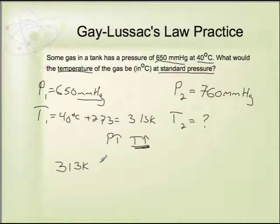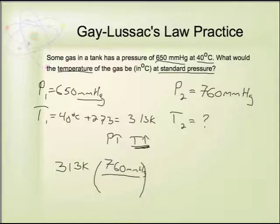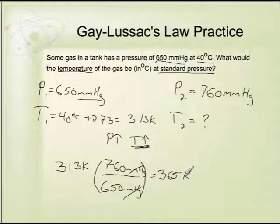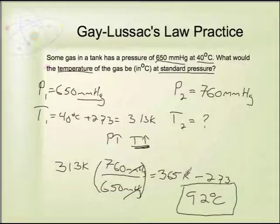I need to take my temperature and see how much it's going to go up. The pressures are used in a ratio: 760 mmHg over 650 mmHg, multiplied by 313 Kelvin. That gives a higher temperature of 365 Kelvin. But the question asks for degrees Celsius, so subtracting 273 from 365 gives 92 degrees Celsius, with no decimal places needed.